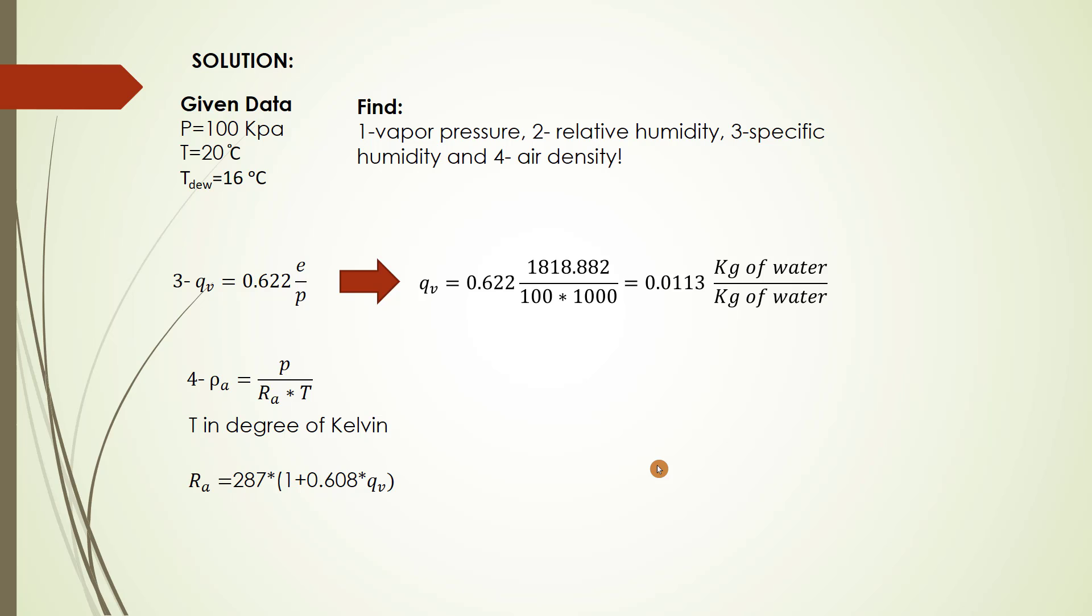Q sub v is specific humidity. The R factor does not change so much; the change depends on specific humidity, but it's so small. But let's find it, otherwise you can use it directly. So R equals 288.974. We'll see that the change is so small, so you can use it directly. But now I found R a, so I use 288.974, put it in the equation.